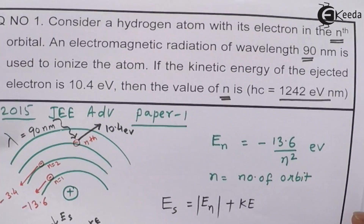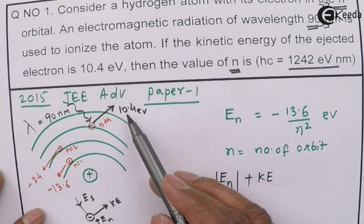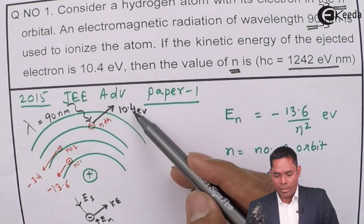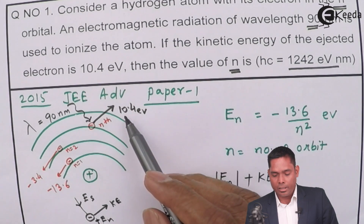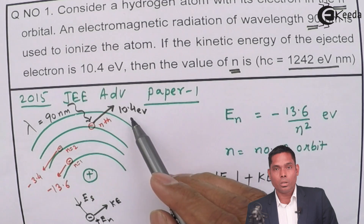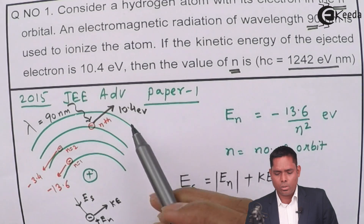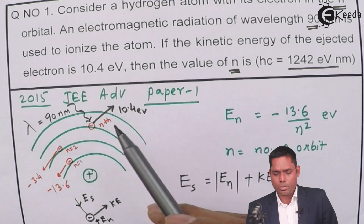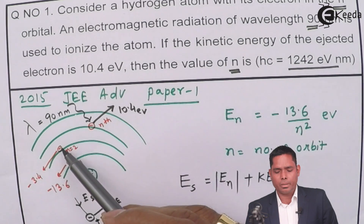From common sense, you can also solve it quickly: the total incident energy is 13.8 eV; subtracting the kinetic energy 10.4 eV gives 3.4 eV, which is the binding energy magnitude. Since 3.4 eV corresponds to the second orbit (n=2), the answer is confirmed as n = 2.